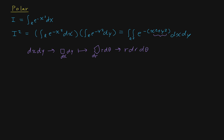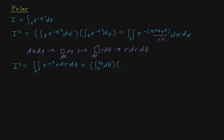Also notice that x squared plus y squared will just change into r squared. So now we can write i squared as the double integral on ℝ² of e to the minus r squared, times r dr dθ. We can break this up into an integral for theta — just one full revolution, from 0 to 2π — and an integral for r, from 0 to infinity: r e to the minus r squared dr. The first integral is obviously just 2π.